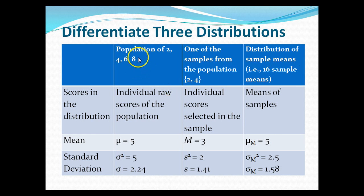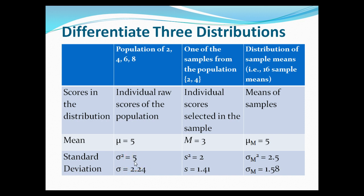Looking at an example: we have a population of 2, 4, 6, 8. The scores in the distribution are the individual raw scores. The mean is μ = 5, and the standard deviation is 2.24 (σ squared, the variance, equals 5). Looking at one sample a researcher obtains — say values 2 and 4 — these are individual scores selected in the sample. The mean of these scores is 3, the variance is 2, and the standard deviation is 1.41.